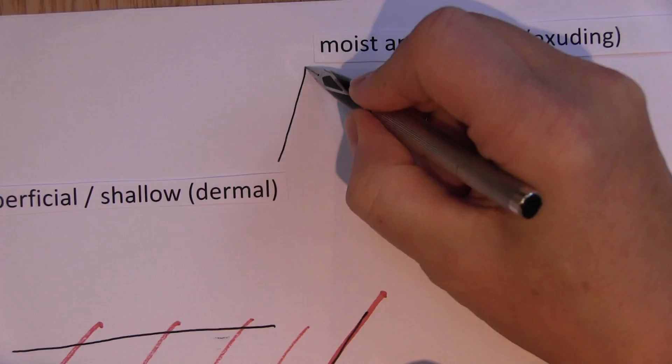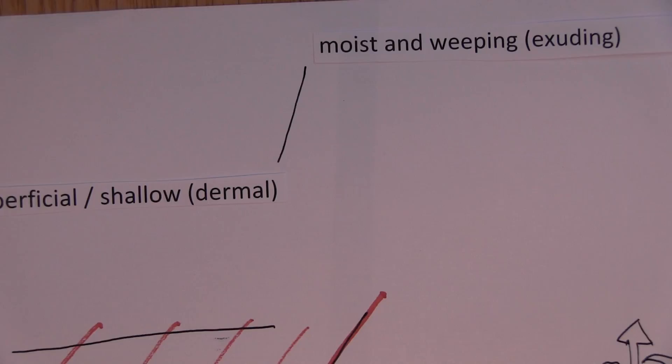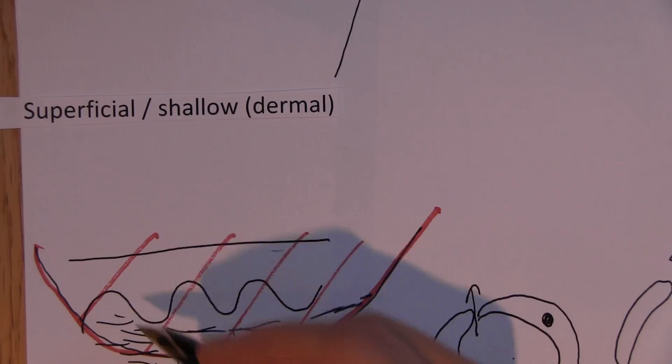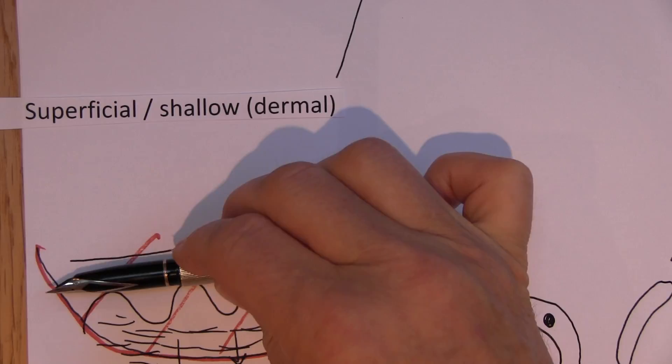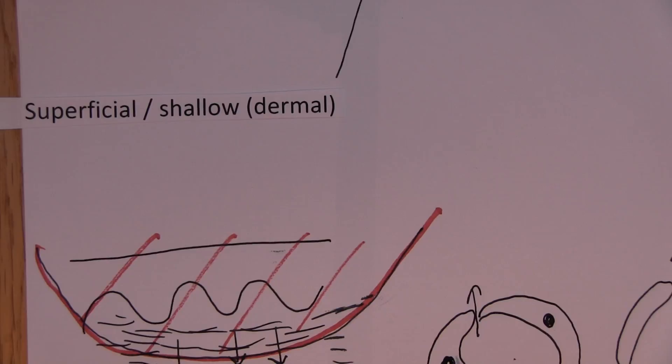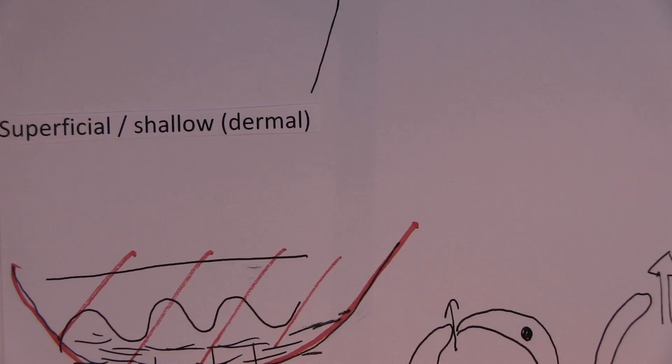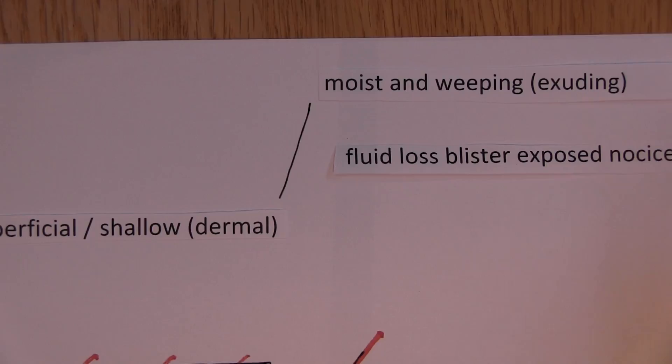Now in some areas the epidermis is not burnt away. It's still there, but it's dead because it's been burnt. But can you see that means we've got a situation now where we've got lots of tissue fluid, but the epidermis is still there. So the tissue fluid has got to go somewhere. So what happens is the tissue fluid just collects underneath the dead epidermis. And that is what we call a blister. So fluid loss blistering.